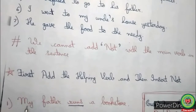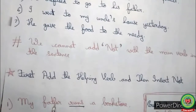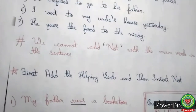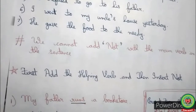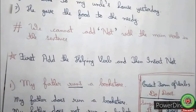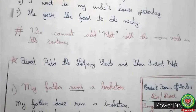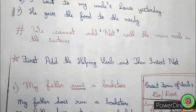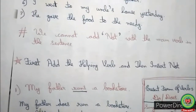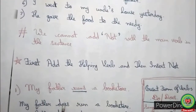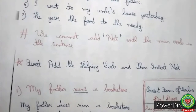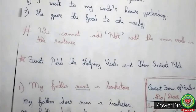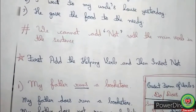'My father' is a singular subject in this sentence. Whenever the singular subject is given — like he, she, it — we always add 'does' as the helping verb. So the sentence becomes: 'My father does run a bookstore.' Now we change this into negative and the sentence becomes: 'My father does not run a bookstore.'